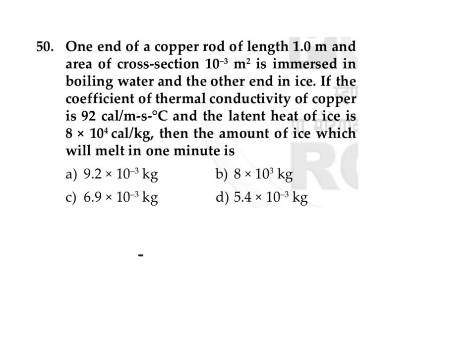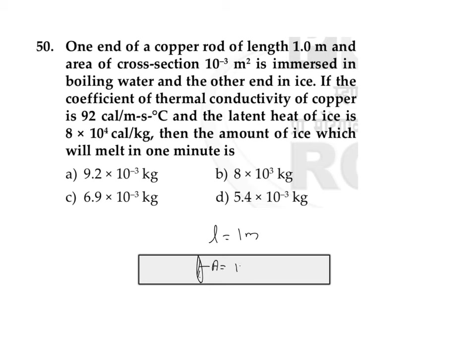We are considering a copper rod conductor of length L = 1 meter and area of cross-section A = 10⁻³ m². One end is immersed in boiling water, so it is maintained at 100°C, and the other end is in contact with ice, so it is at 0°C.